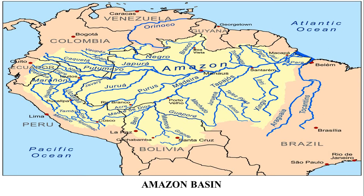Numerous tributaries join the Amazon River to form the Amazon Basin. The river basin drains across parts of Brazil, Peru, Bolivia, Ecuador, Colombia, and a small part of Venezuela.